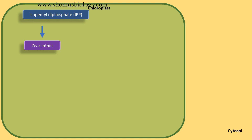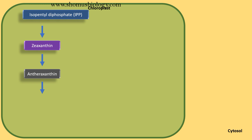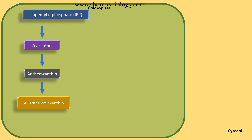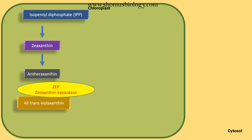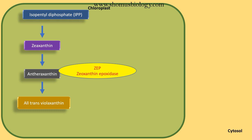This isopentenyl diphosphate (IPP) is converted into zeaxanthin first, and then zeaxanthin is converted into antheraxanthin, which is then converted to all different stereoisomeric forms of violaxanthin. This conversion of zeaxanthin to antheraxanthin and antheraxanthin to trans-violaxanthin is done by the zeaxanthin epoxidase enzyme, also known as ZEP.